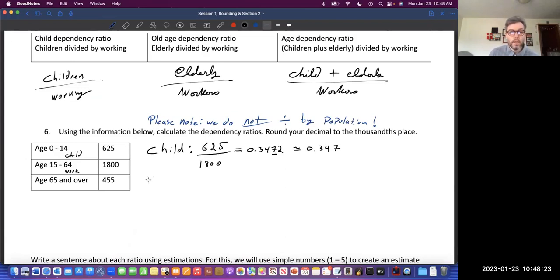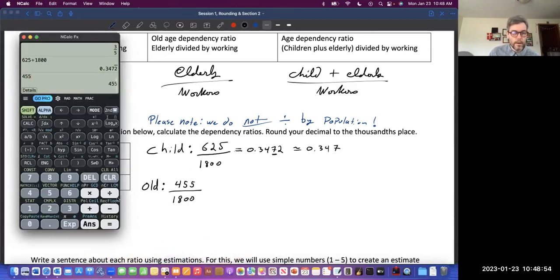Now, let's do the old age dependency. If you're over 64 years old and you're listening to this, am I calling you old? No, I'm not calling you old. But that's what they determined it. We have 455 of those people divided by 1,800.